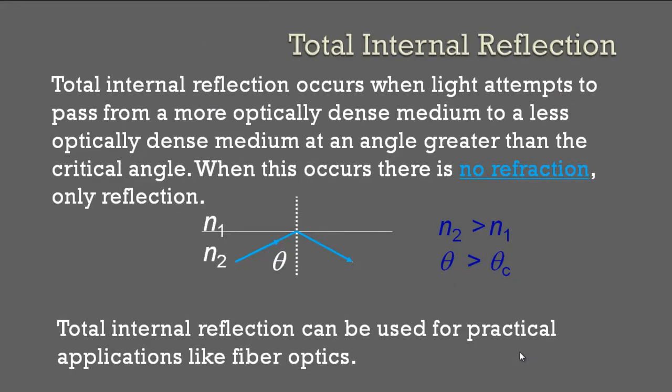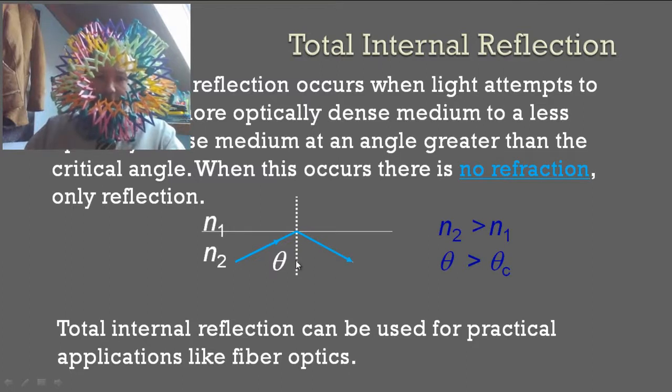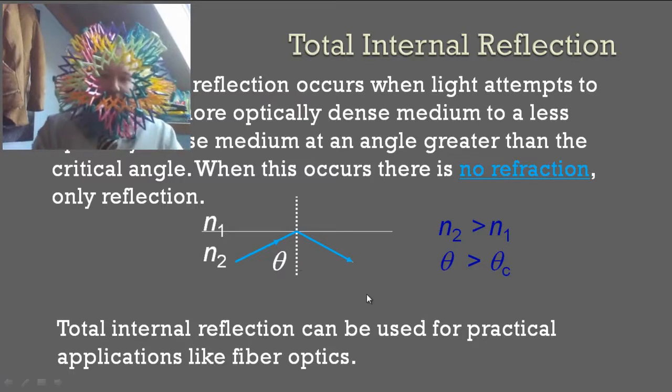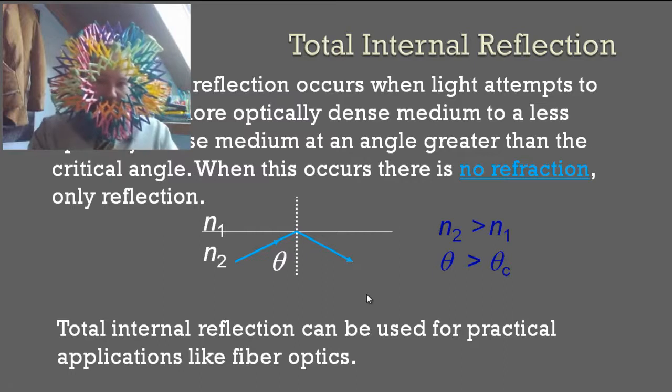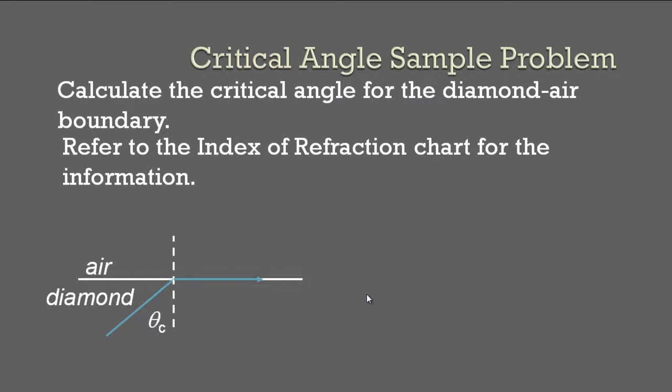This is where total internal reflection occurs. That occurs when light attempts to pass from a more optically dense medium to a less optically dense medium at an angle greater than the critical angle. When this occurs, there is no refraction, it doesn't refract, it only reflects. So it's like it's hitting a mirror. Total internal reflection can be used for practical applications like fiber optics, which I said some of you are probably using right now if you have Verizon Fios Internet, because Fios stands for fiber optics.